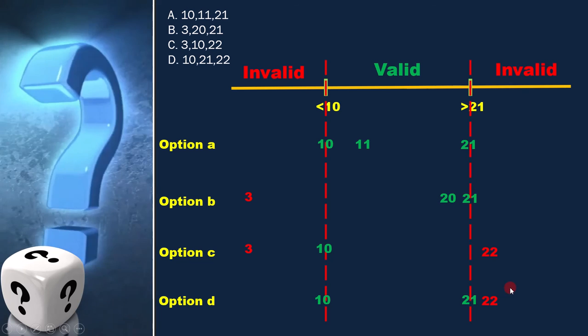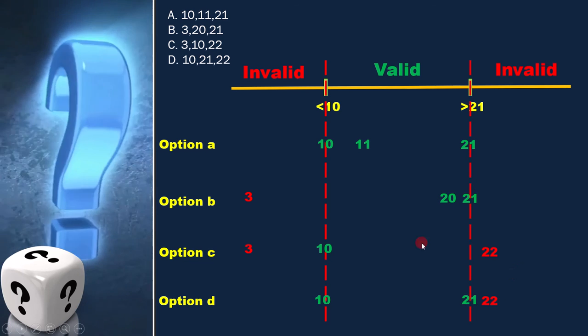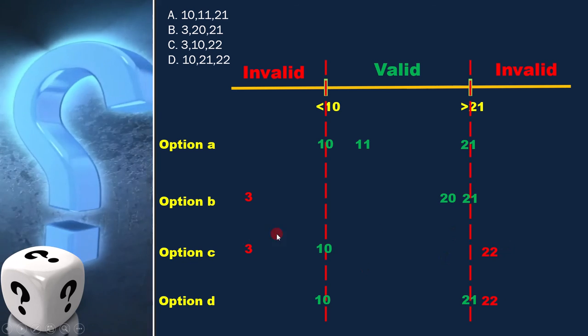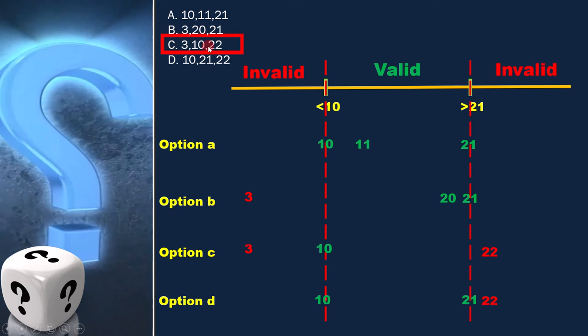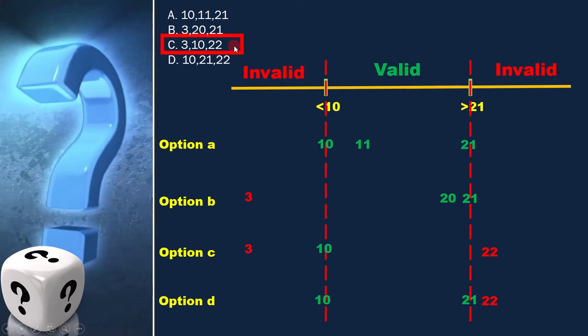It is clear that in option C, all equivalence classes are covered. Therefore, option C is the correct answer. Thank you.